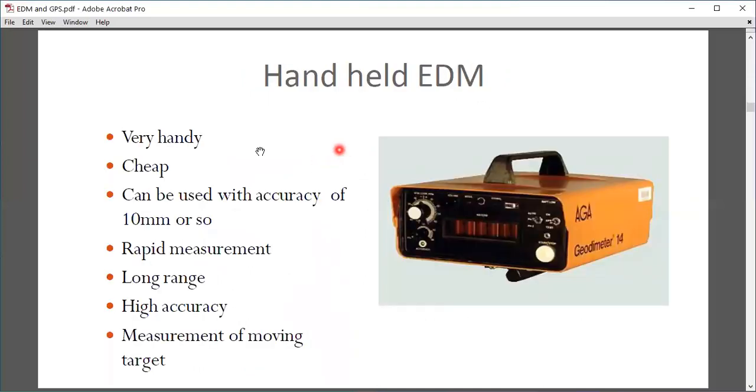Handheld EDMs are very handy, cheap, can be used with accuracy of 10 mm, provide rapid measurement, have long range, high accuracy, and can measure moving objects. Motorway police and traffic wardens use handheld EDMs with speed checking capabilities.